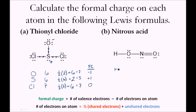Now for nitrous acid. We have hydrogen, oxygen, nitrogen, and another oxygen. We write the oxygen atom twice because they're not identical. We'll do the same thing again and set up columns for valence electrons and electrons on the atom, then calculate their formal charge.